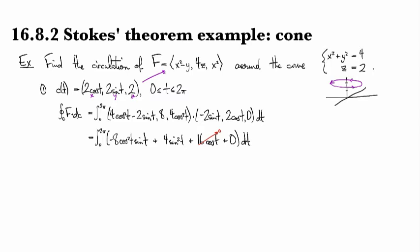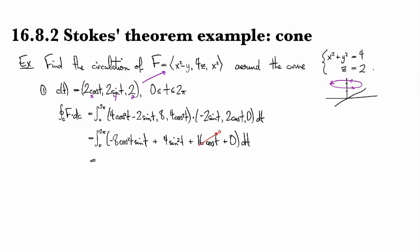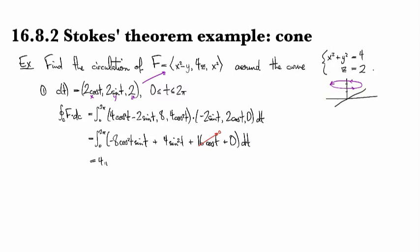So that one is going to end up canceling out. And so we end up with 4π and I'll let you verify the details.